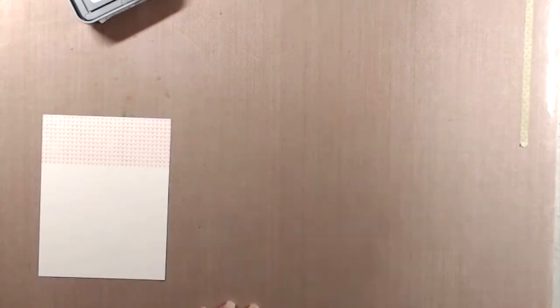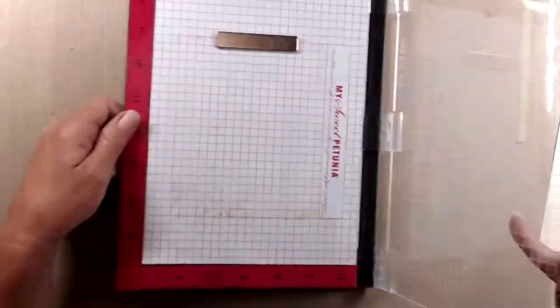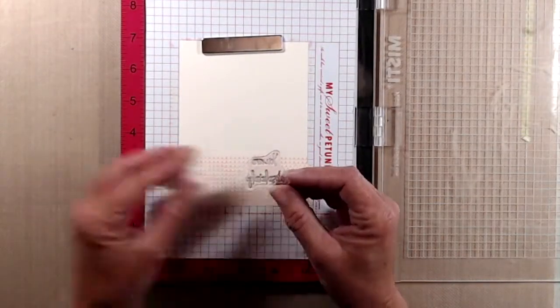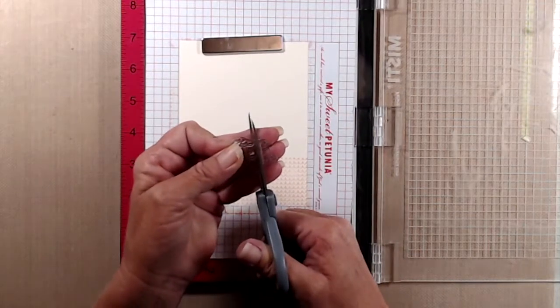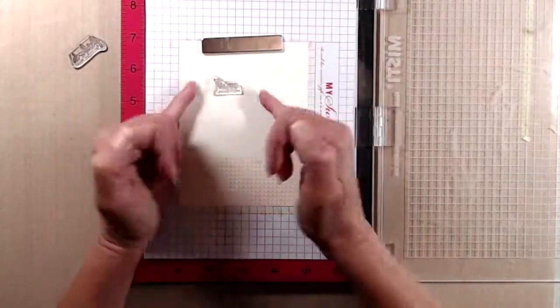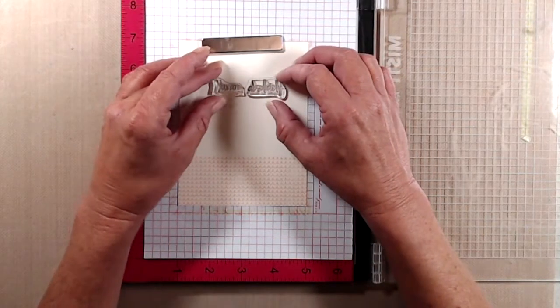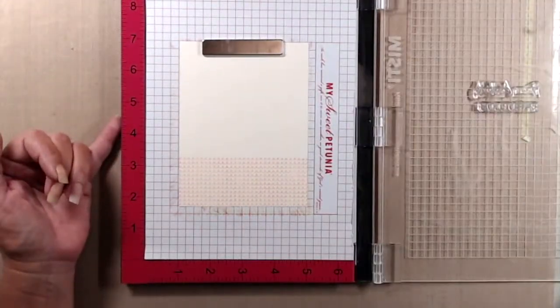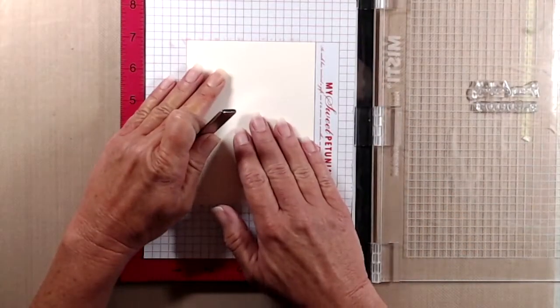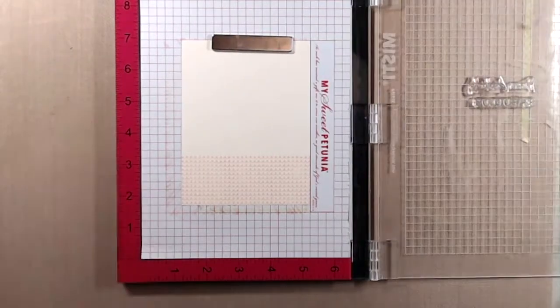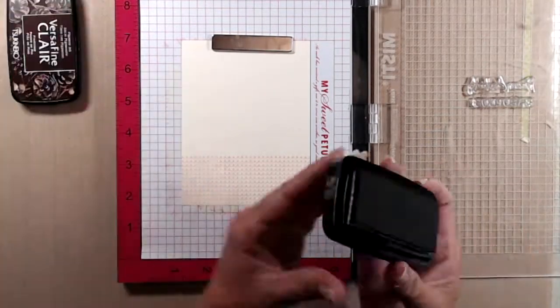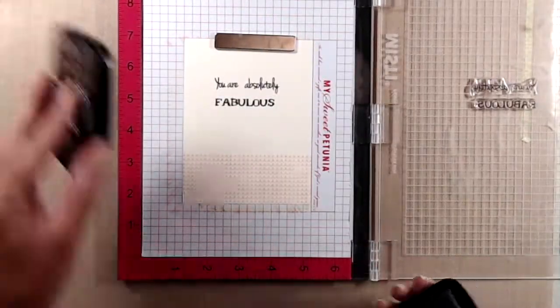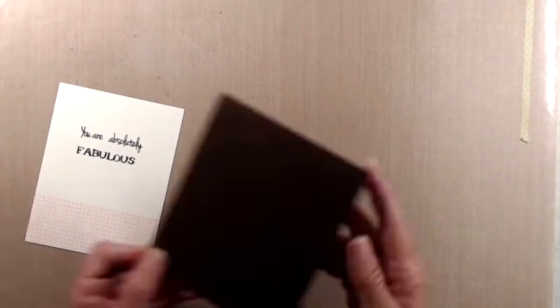Then I placed that panel in my MISTI to stamp my sentiment and I'm going to perform a little bit of surgery here and snip off the bottom part of the sentiment so that I can have it on one line. The sentiment reads, you are absolutely. So I lined that up and then added in the word fabulous underneath that. I closed my MISTI door, picked up the stamps and I inked that up with VersaFine Clair pinecone ink and stamped the sentiment. I adhered that to the inside of a top folding A2 sized note card that I made from a piece of dark brown cardstock.